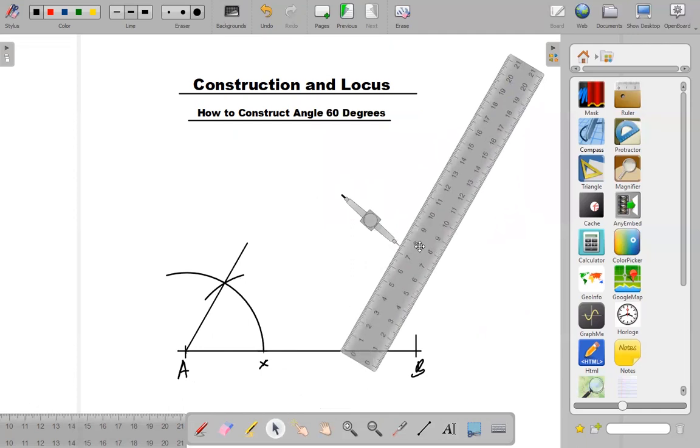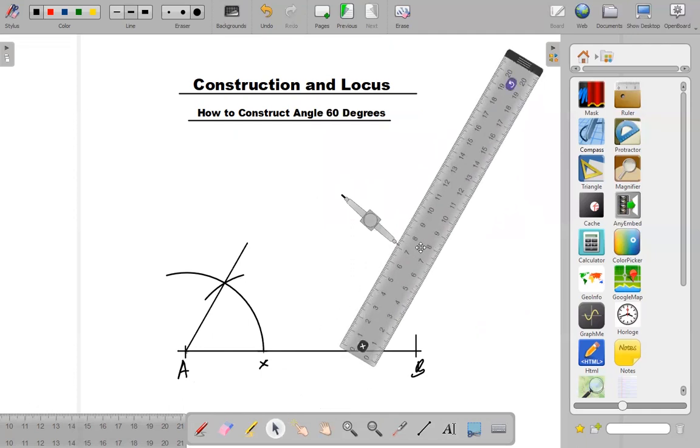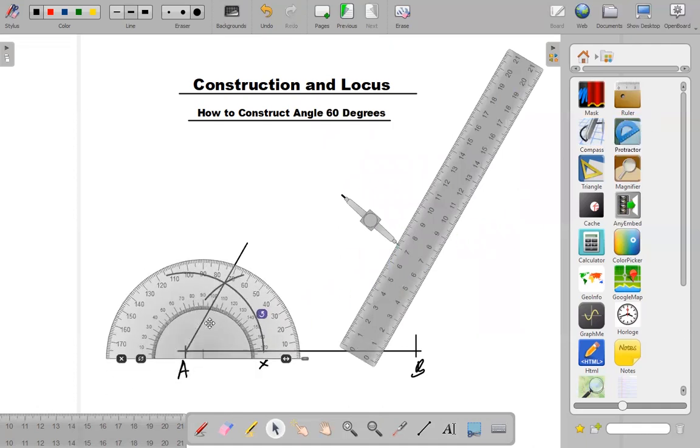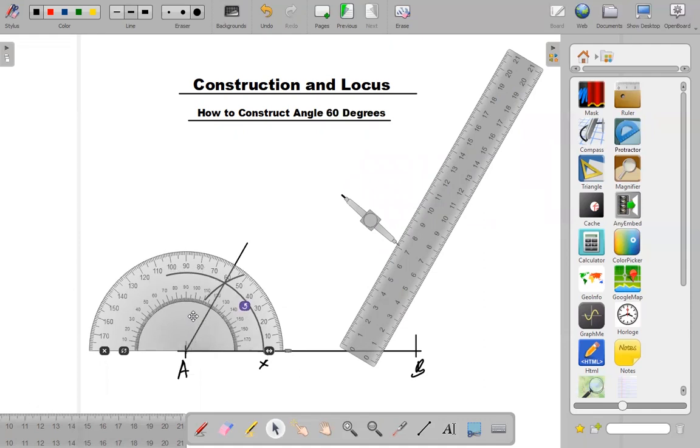So this is 60 degrees. You can use a protractor to confirm it. Place your protractor like this. You can see that is 60 degrees.